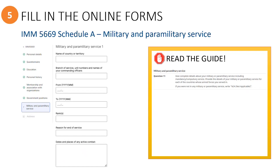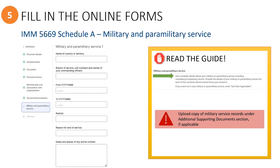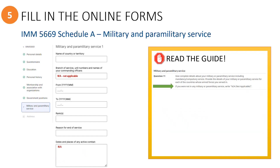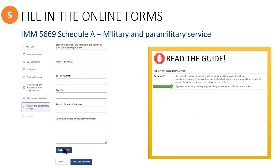This next section is where you would enter any military or paramilitary service, including mandatory or compulsory service. Provide complete details for each country that the refugee has served in the armed services. If the refugee has copies of their service records, be sure to upload them to the portal under the Additional Supporting Documents section. If the refugee has not served in the military or paramilitary service, simply enter Not Applicable. There is an option to add more than one record of service if needed. Click the button to continue when you have completed this section.